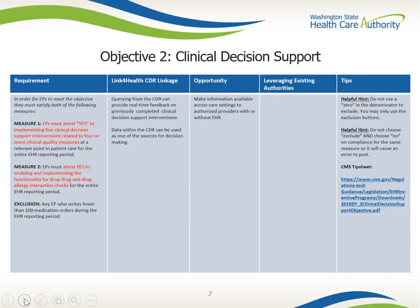Objective 2: Clinical Decision Support. In order for eligible providers to meet this objective, they must satisfy both of the following measures. Measure 1: EPs must attest yes to implementing five clinical decision support interventions related to four or more clinical quality measures at a relevant point in patient care for the entire EHR reporting period. Measure 2: EPs must attest yes to enabling and implementing the functionality for drug-to-drug and drug-allergy interaction checks for the entire EHR reporting period.